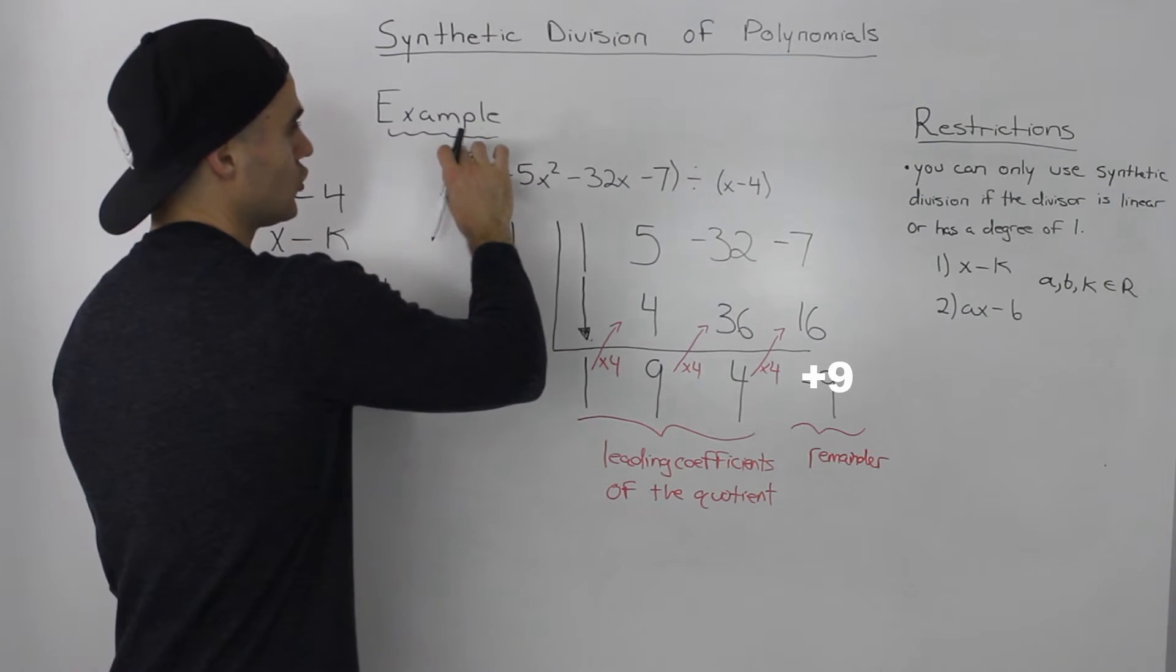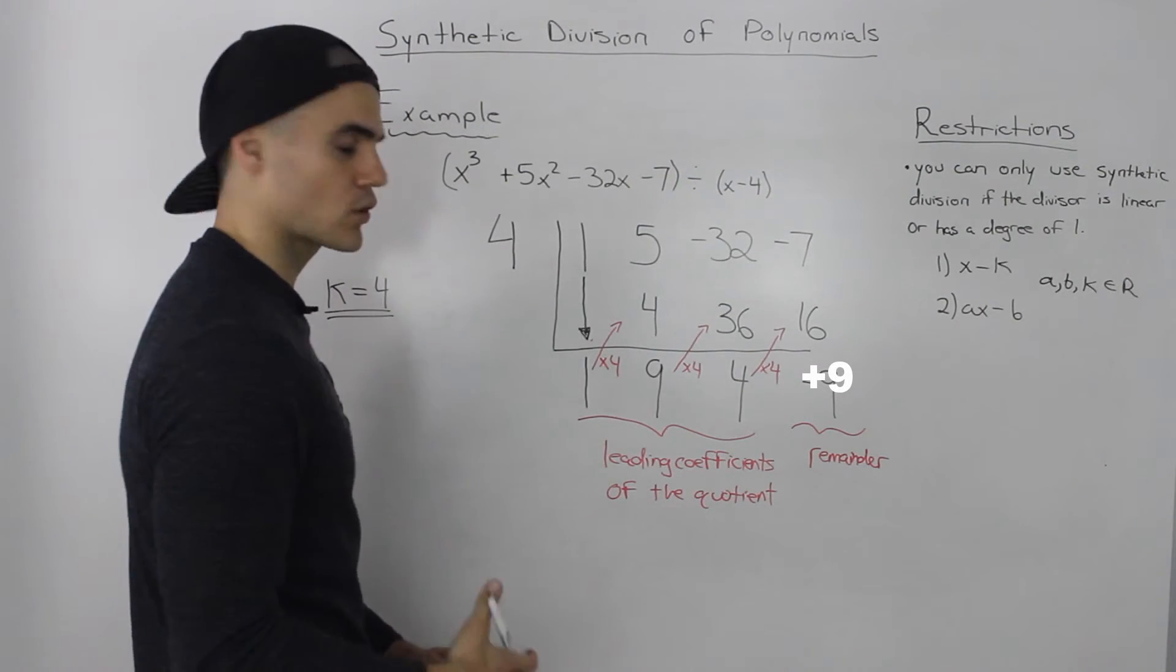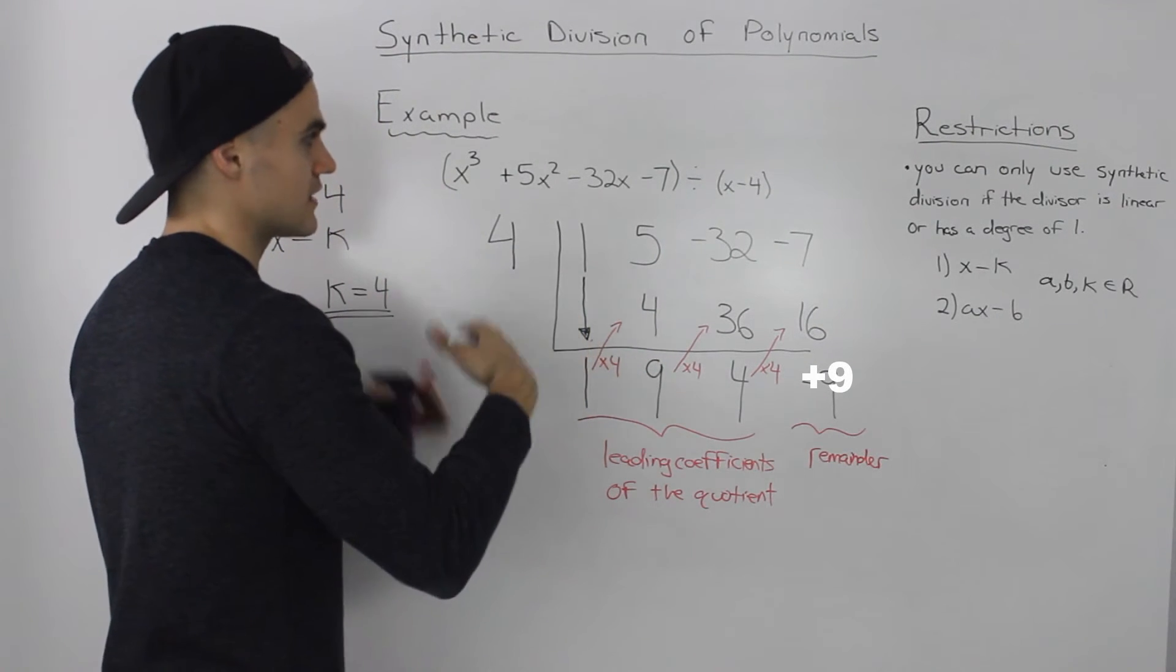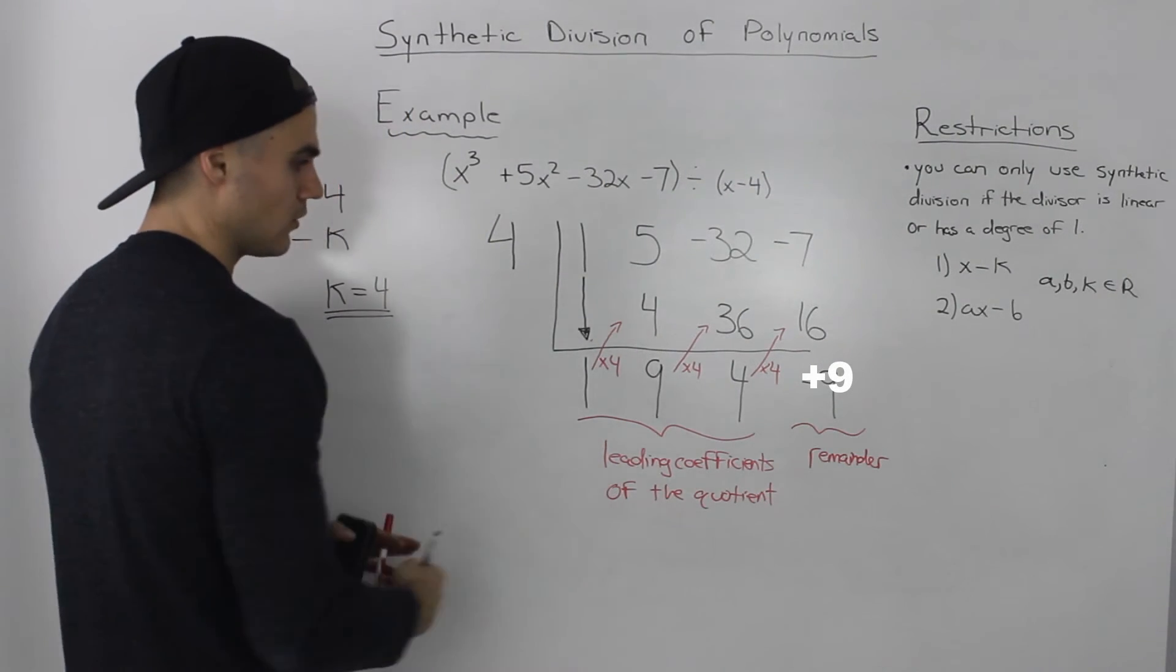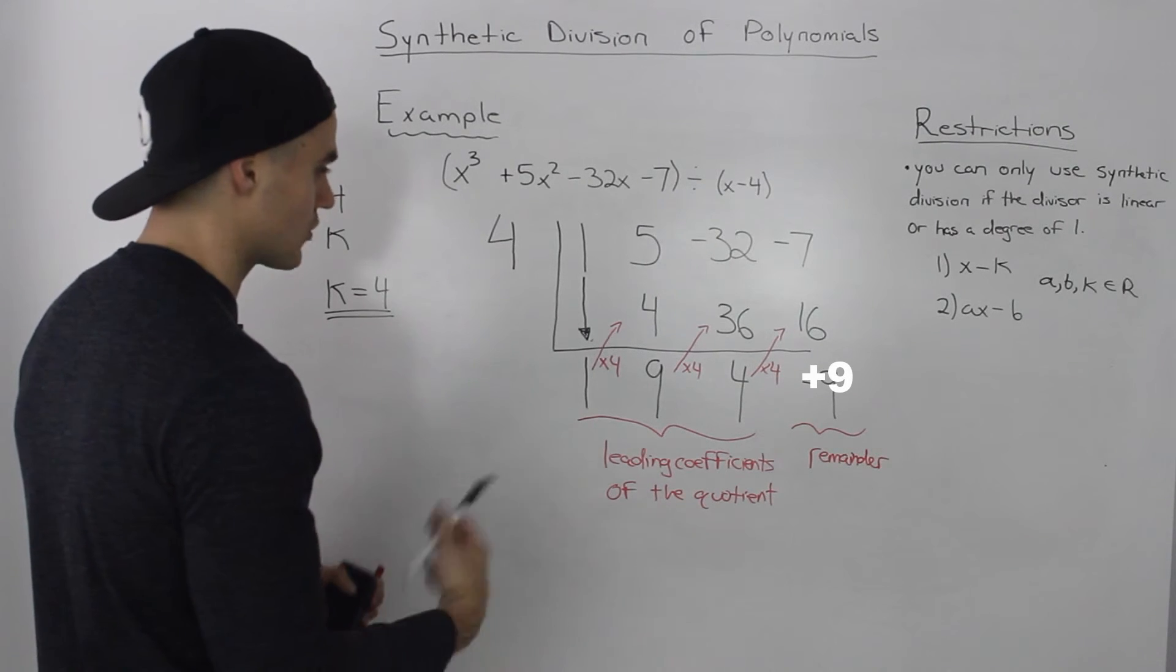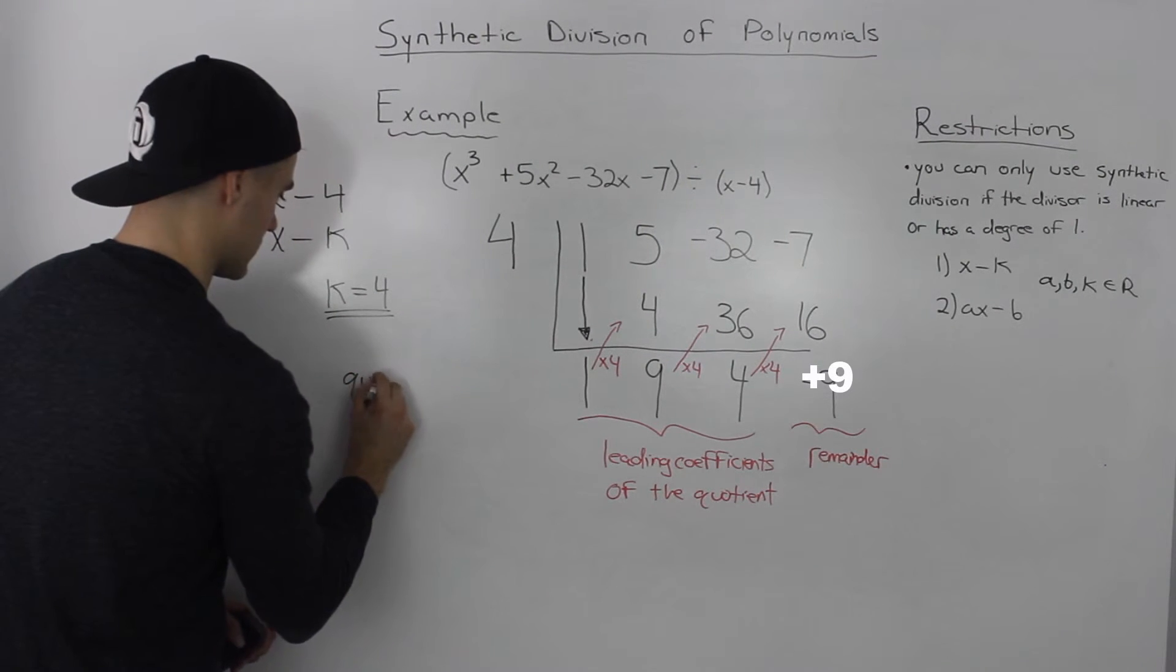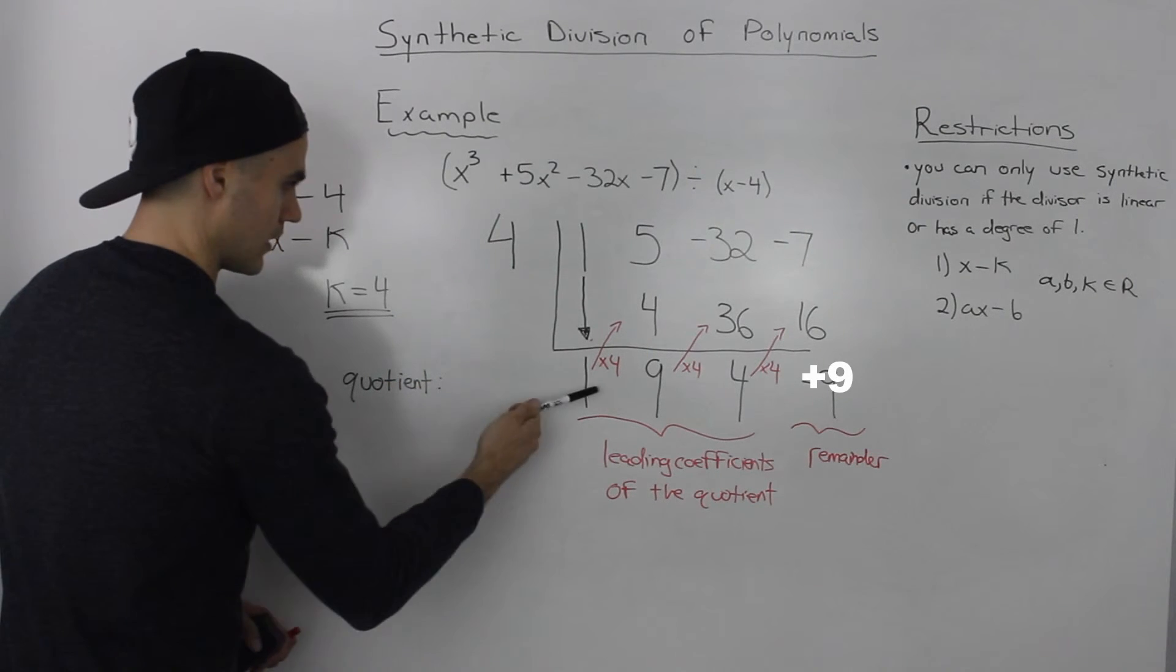And since we had a cubic, or a degree of 3 for the dividend, and the divisor had a degree of 1, we know that the quotient is going to have a degree of 2. Remember, the degree of the quotient is always the difference between the degree of the dividend and the degree of the divisor. So we know that our quotient is going to be a quadratic function, or have a degree of 2.